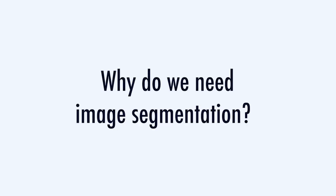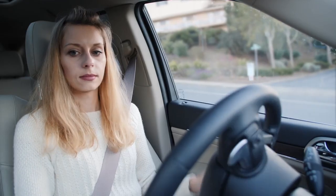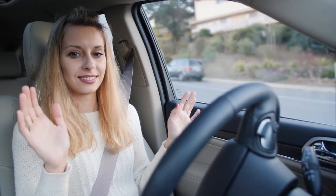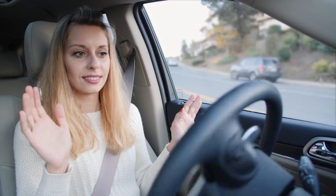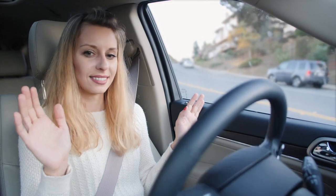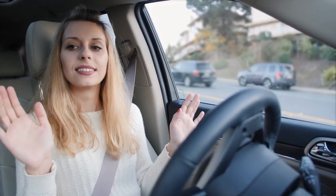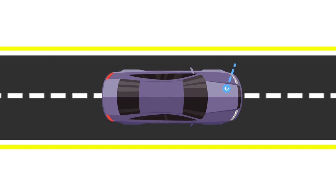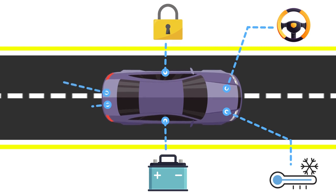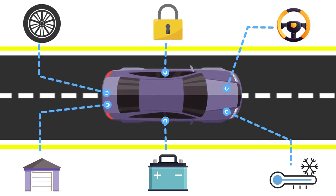Why do we need image segmentation in the first place? If I say autonomous vehicles, it becomes clear. Autonomous vehicles need sensory devices like cameras, radar, and lasers to allow the car to perceive the world around it and create a digital map of its surroundings. Autonomous driving is not even possible without object detection, which itself involves image classification and segmentation.